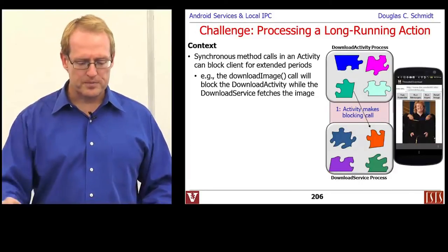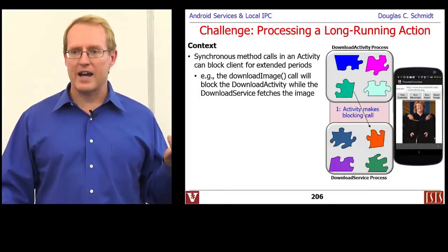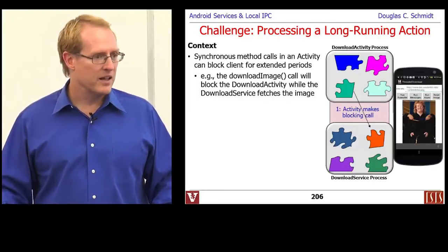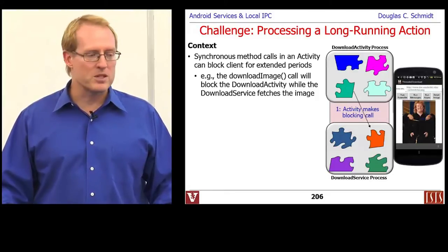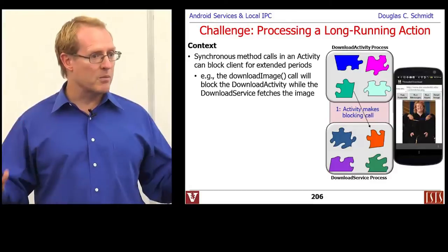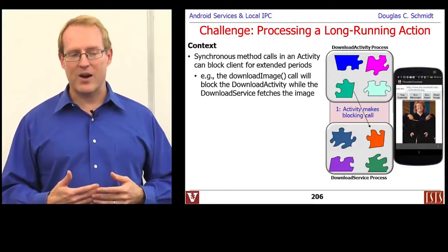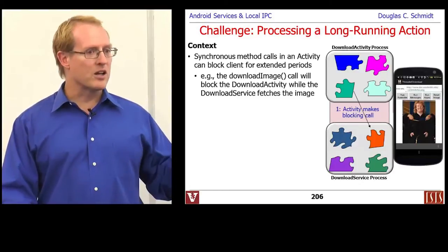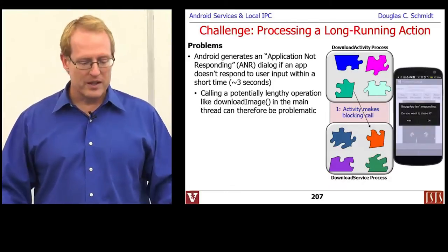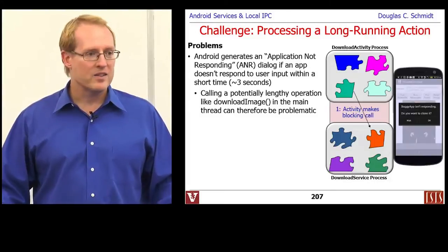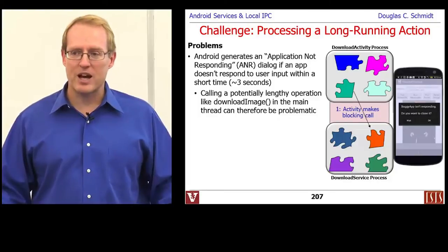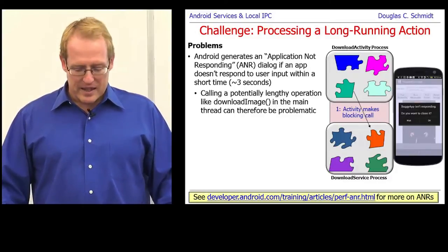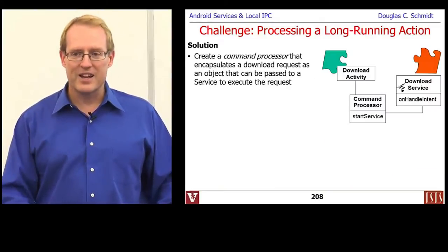Let's talk about the context in which this appears. We're going to want to be able to process some long-running action—where long-running means something that would potentially take too long and would end up blocking the UI thread such that you would get an ANR. So if we're downloading some kind of image from a server, that might take a while depending on how big the image is, the load on the device, the network, or the server. If we're not careful, we could end up blocking in that download call. The problem is if you do blocking calls from the main thread of control, the UI thread, that's going to risk triggering the Application Not Responding dialog. Take a look at the referenced website for more information about the perils of ANRs and when they occur.